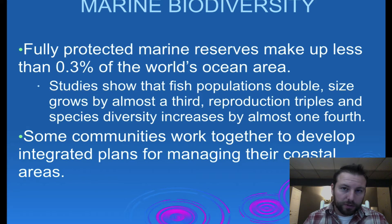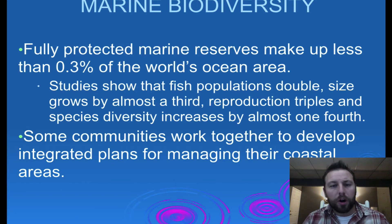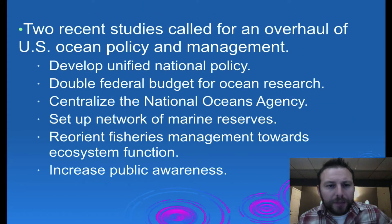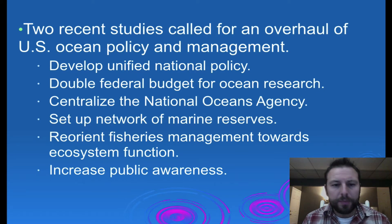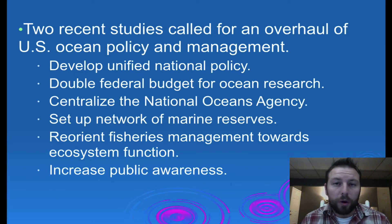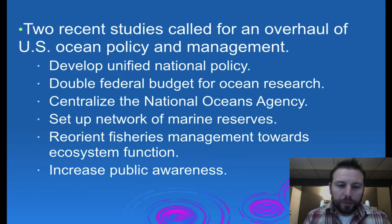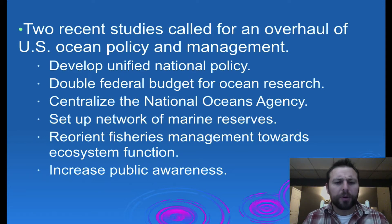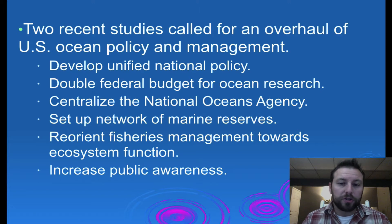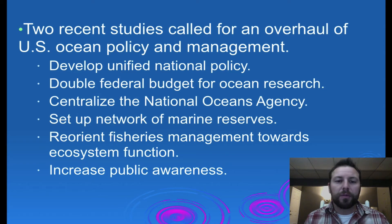Some communities work together to develop integrated plans for managing their coastal areas, and once we do that on a local level it usually works its way upward to help develop larger legislation to protect bigger areas. We've seen studies calling for an overhaul of ocean policy — basically developing a unified national plan, giving the federal government more money for ocean research, establishing a centralized national oceans agency, setting up a network of marine reserves, and reorienting fisheries management toward ecosystem function. A number of states are doing this; in Alaska they've basically controlled their salmon population and others, making them sustainable for future generations.